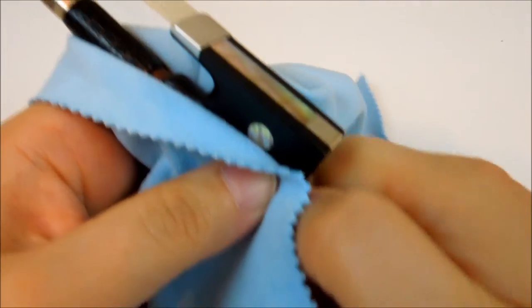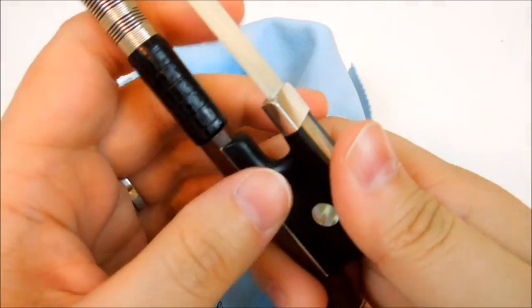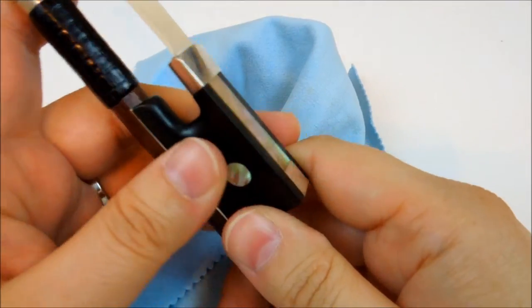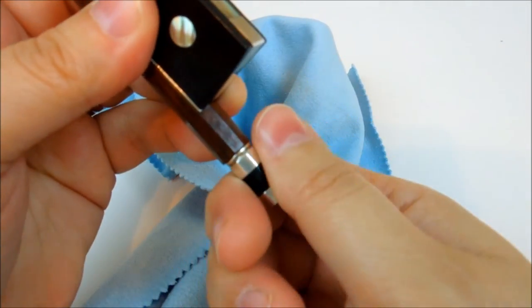As you notice, this process took just a few seconds. You want to make sure that you will do it every single time after you finish practicing. Also remember when you store the bow in the case, you want to loosen the hair of the bow by turning the screw to the left.